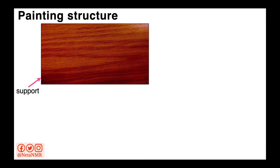First, every painting needs to have a support — a base on which the painting is built. There are several different types of materials that can be used for the support. This includes softer materials like canvas, paper, and leather. But we can also use harder materials for support, such as wood, metal, or glass. Here we'll focus more on paintings on canvas.